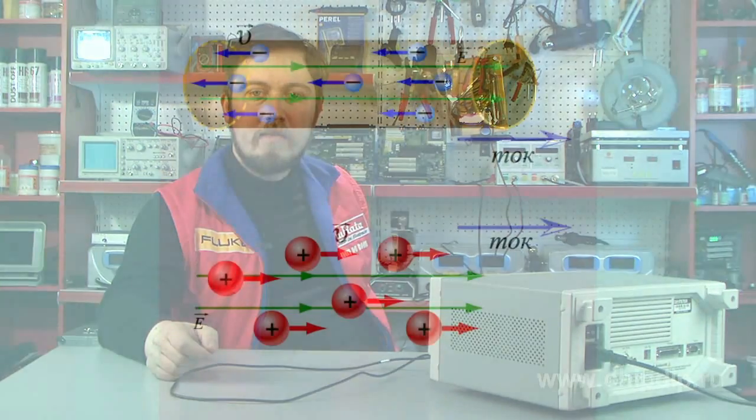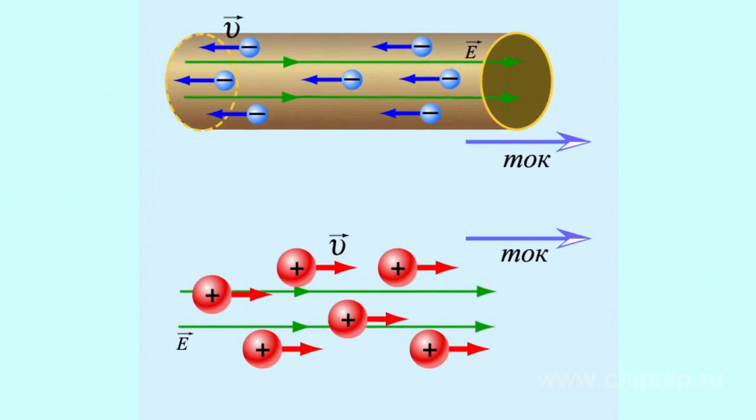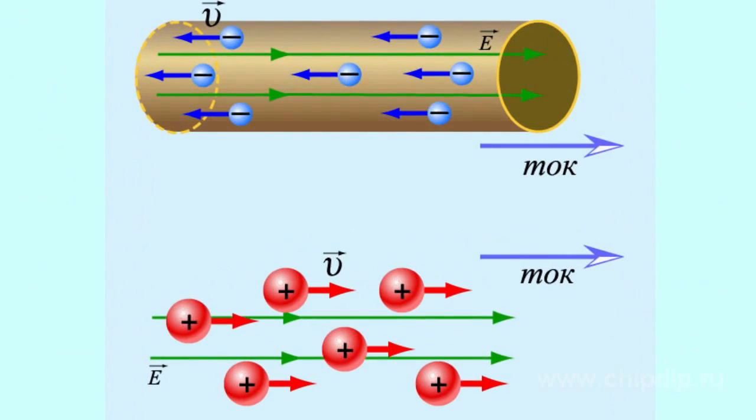Directed motion of electric charges is called electric current. Electric current can occur in closed electrical circuits.